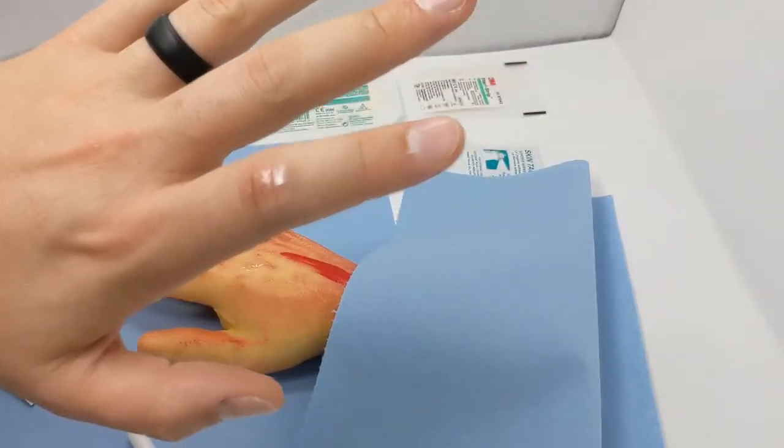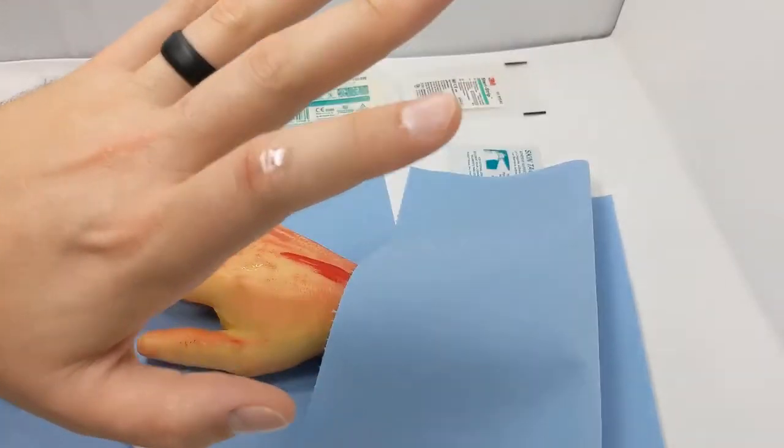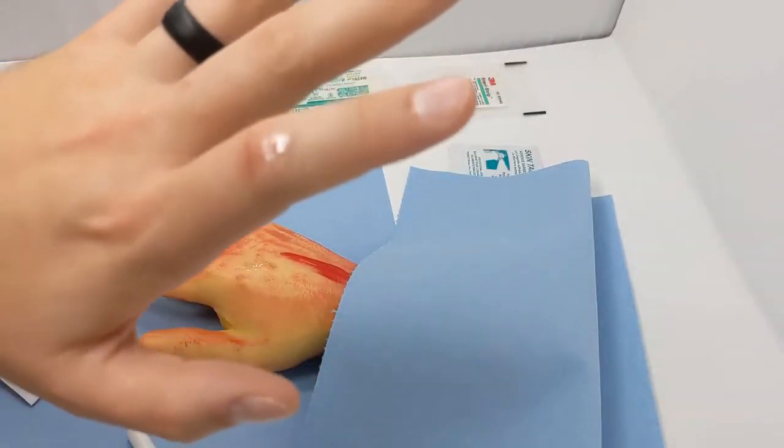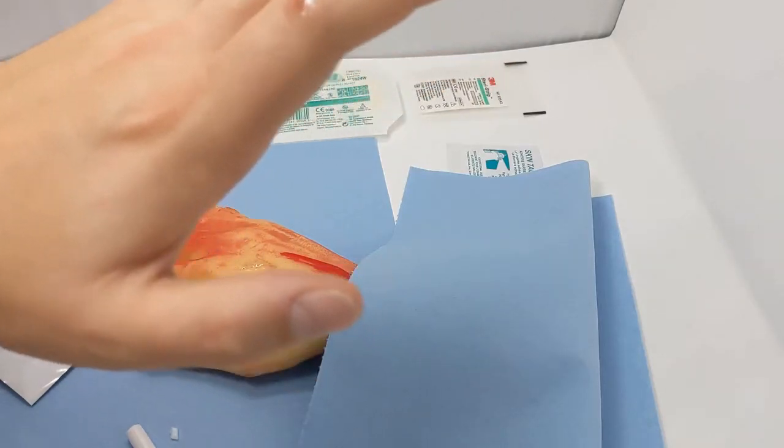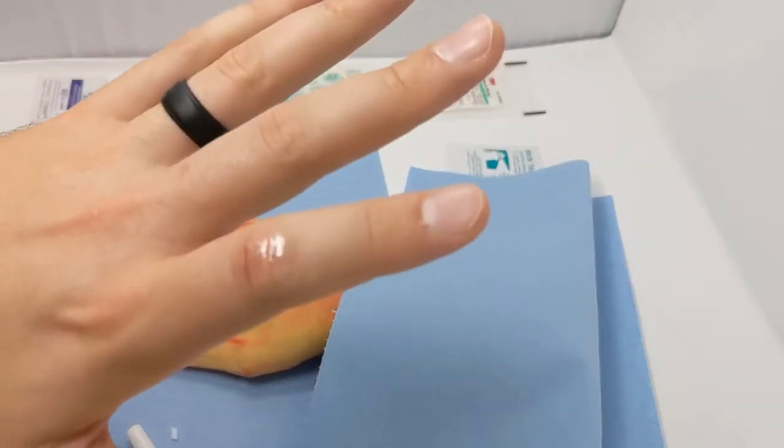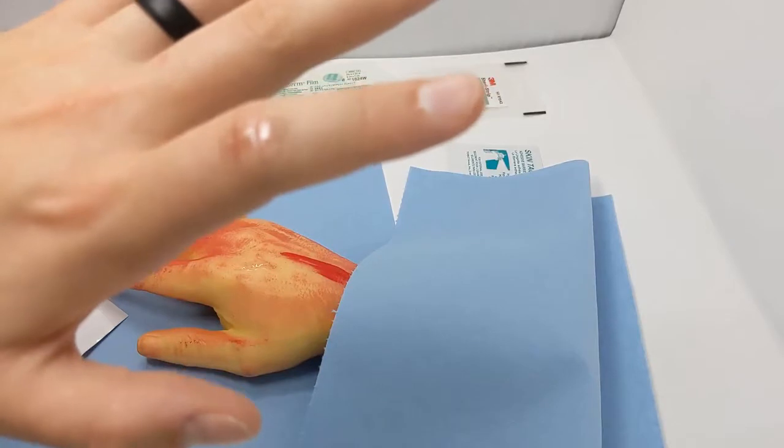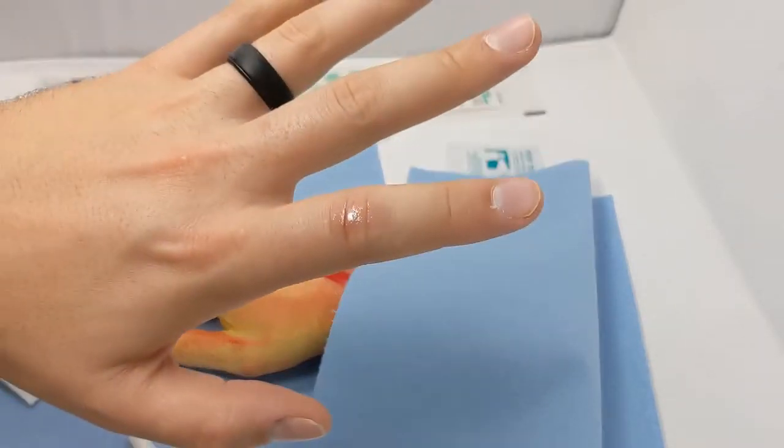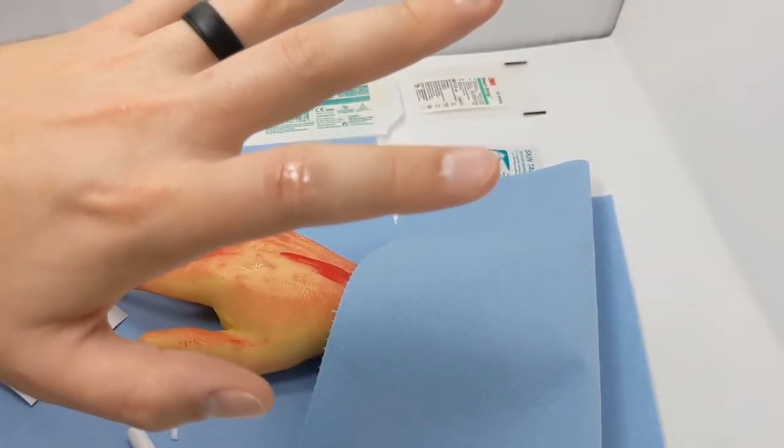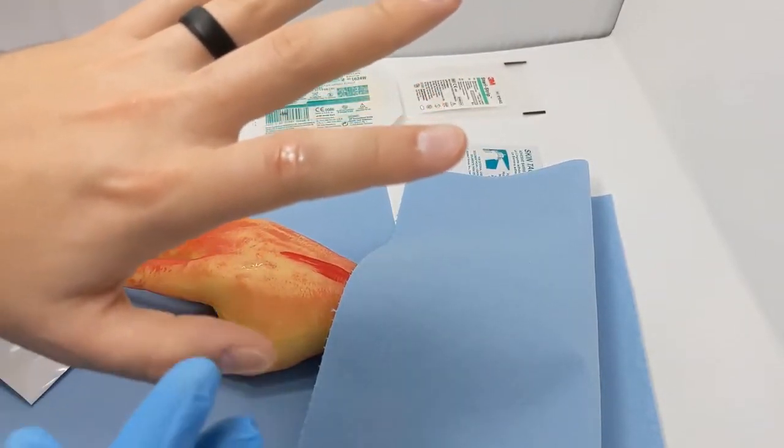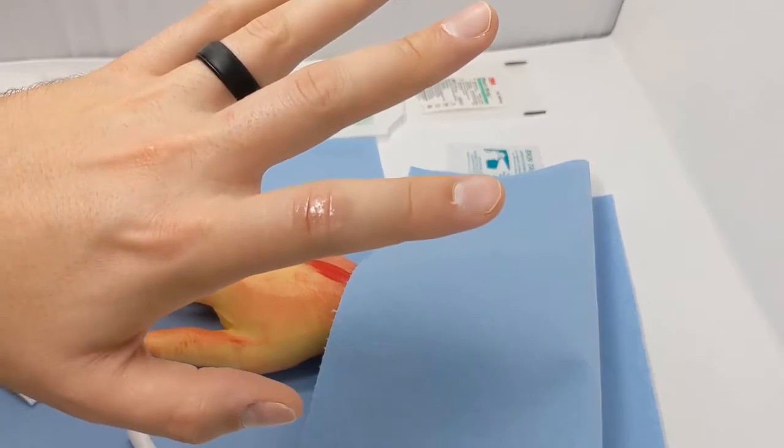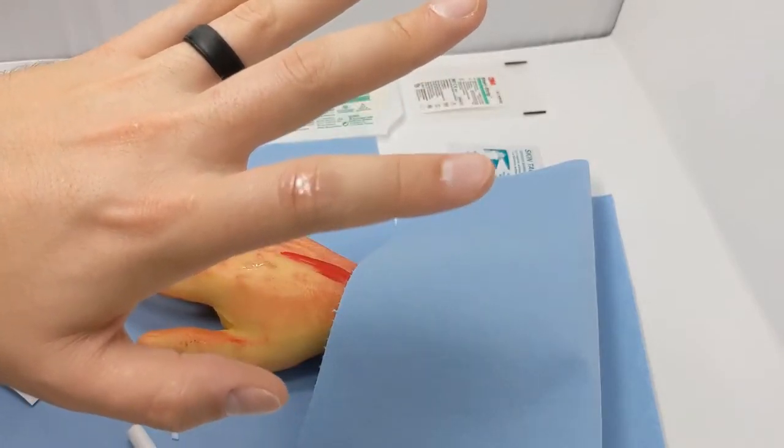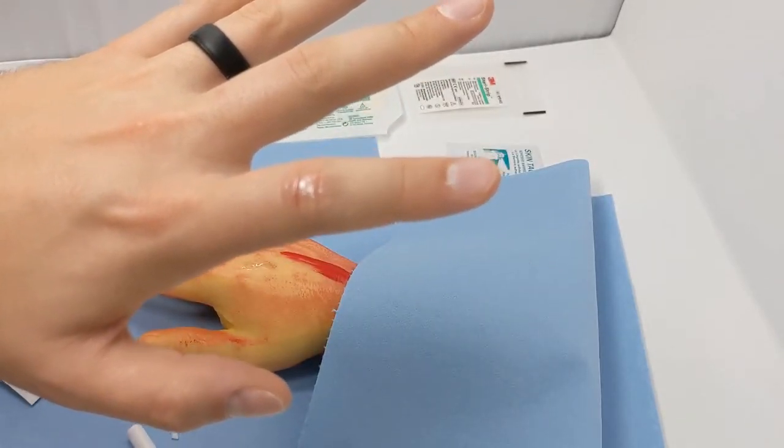This way is really good for areas that are small, not super deep, areas of joints like the face or the fingers. What it does is create almost like a second layer of skin on top to keep it clean and from getting infected, and it will keep that wound closed. This generally lasts around five days or so, and then it will just naturally fall off.